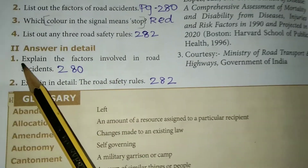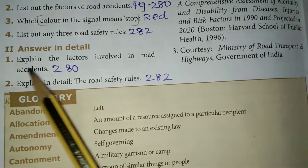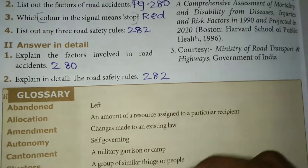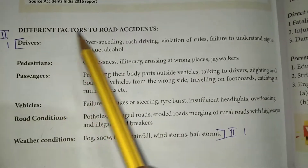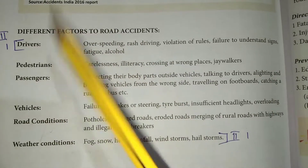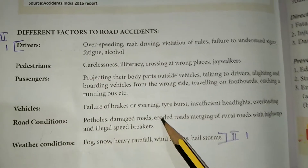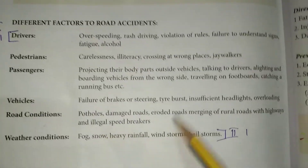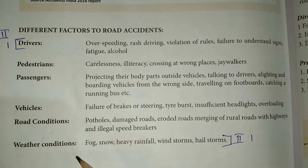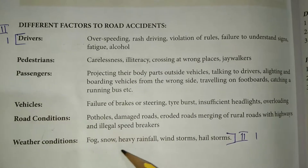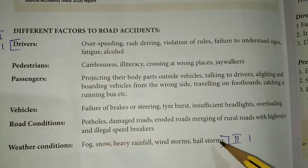Answer in detail. First: explain the factors involved in road accidents. This is page number 280. The heading is 'different factors of road accidents.' The explanation covers weather conditions such as fog, snow, heavy rain, strong wind, storm, and hail storms as major contributing factors.